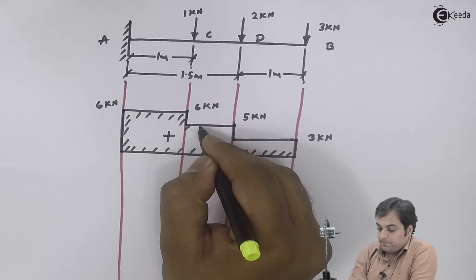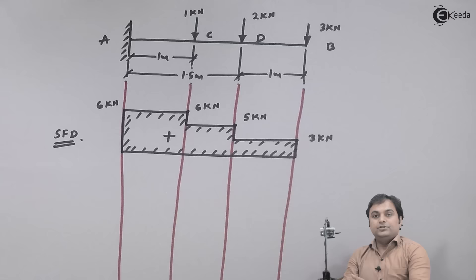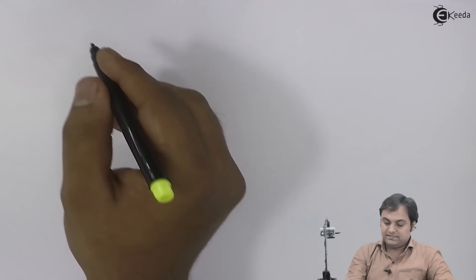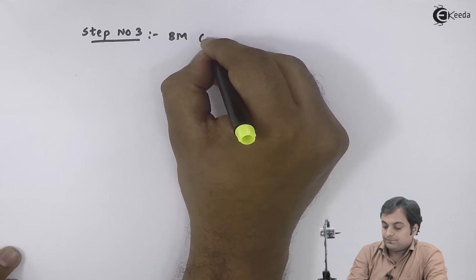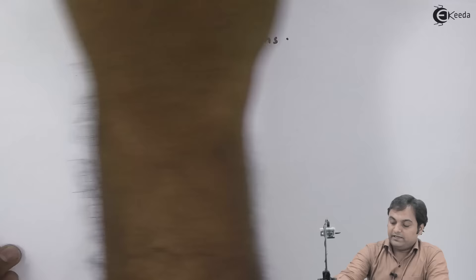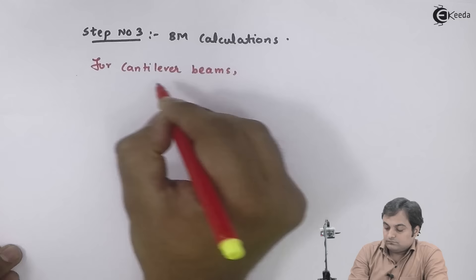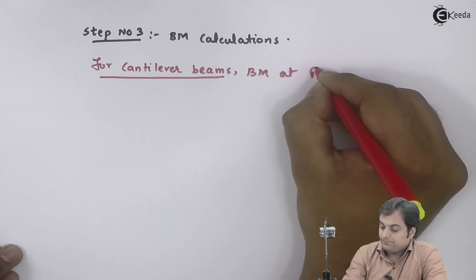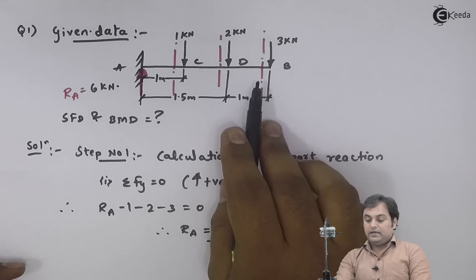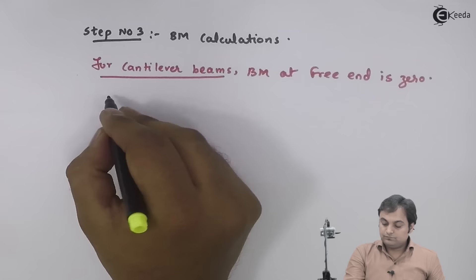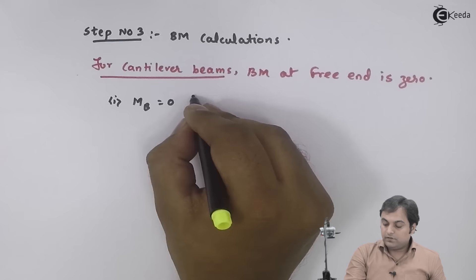Step three: BM calculations. Remember — for cantilever beams, bending moment at the free end is zero. At point B, since it is the free end, bending moment at B equals zero.